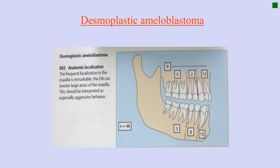Looking back at the classification: desmoplastic ameloblastoma is discussed separately. You have conventional ameloblastoma, unicystic ameloblastoma, and desmoplastic ameloblastoma. Desmoplastic is outlined as a distinct type because, unlike all other ameloblastomas, desmoplastic ameloblastomas typically have different clinical and histopathological features. First, they are common in the maxillary anterior region, as opposed to all other ameloblastomas which are common in the mandibular premolar-molar region.